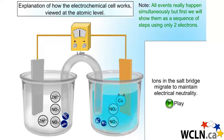The ions will always migrate in such a direction that they will maintain electrical neutrality. The electrons move from the left beaker to the right beaker, meaning that negative charge is arriving in the right beaker. To maintain neutrality there, the positive potassium ions will migrate to the right — two potassium ions migrate to greet the two electrons, keeping the charge neutral.